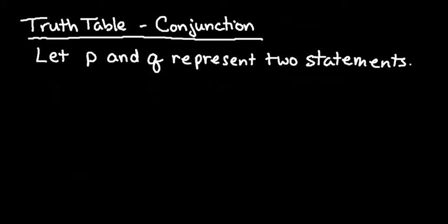For this video, what I want to do is show you how to create a truth table for a conjunction. A conjunction is an AND statement in logic. So anytime you have two statements separated by the word AND, you have a conjunction.